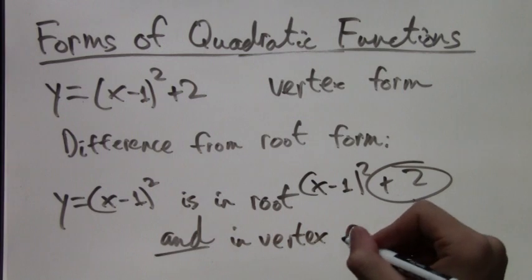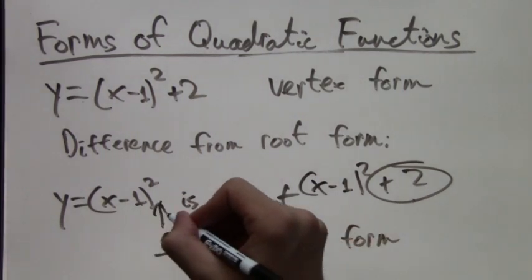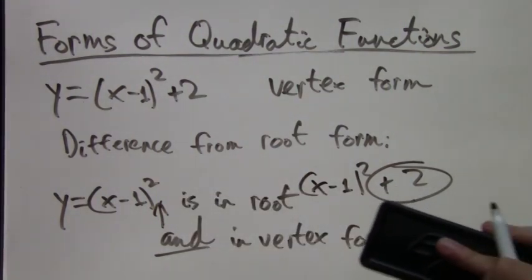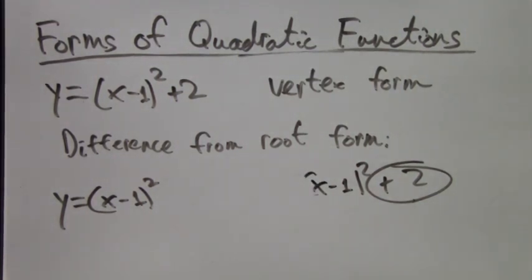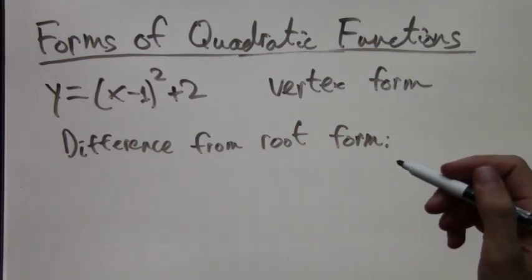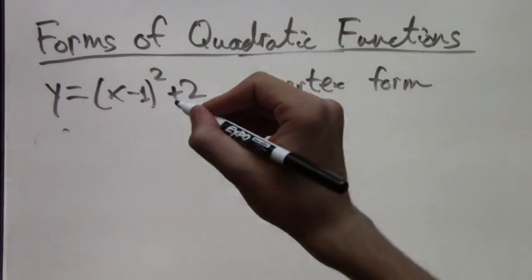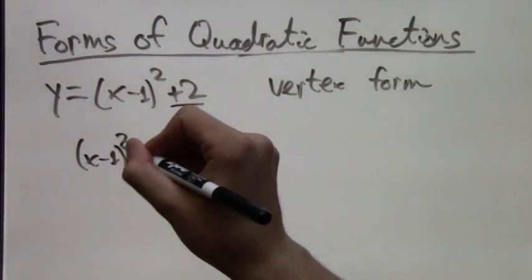So vertex form is something like x minus 1 squared or it could be x plus 2 squared or anything with x inside all squared plus a constant. Now this function that I just wrote was in vertex form and in root form at the same time. But that's for later. Let's take a look at how to convert vertex form into regular standard form.